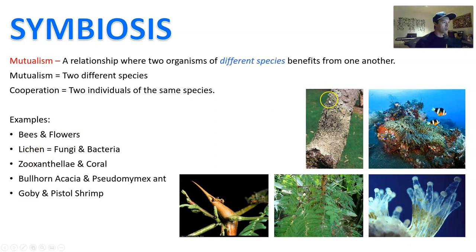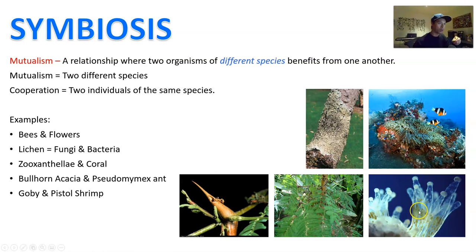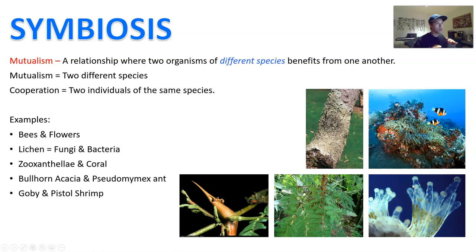Lichen — that grayish material you often see on trees or park benches — is actually a symbiotic relationship between a fungus and a bacteria, which forms that crusty layer on top of the wood. Corals themselves are made up of two organisms: the coral animal and the zooxanthellae protozoan. That protozoan is photosynthetic — it can photosynthesize inside the tissues of the coral and provides the nutrients from photosynthesis to the coral. In turn, the coral provides a home for the zooxanthellae and a position in the sunlight. This makes corals one of the few animals that can actually photosynthesize.